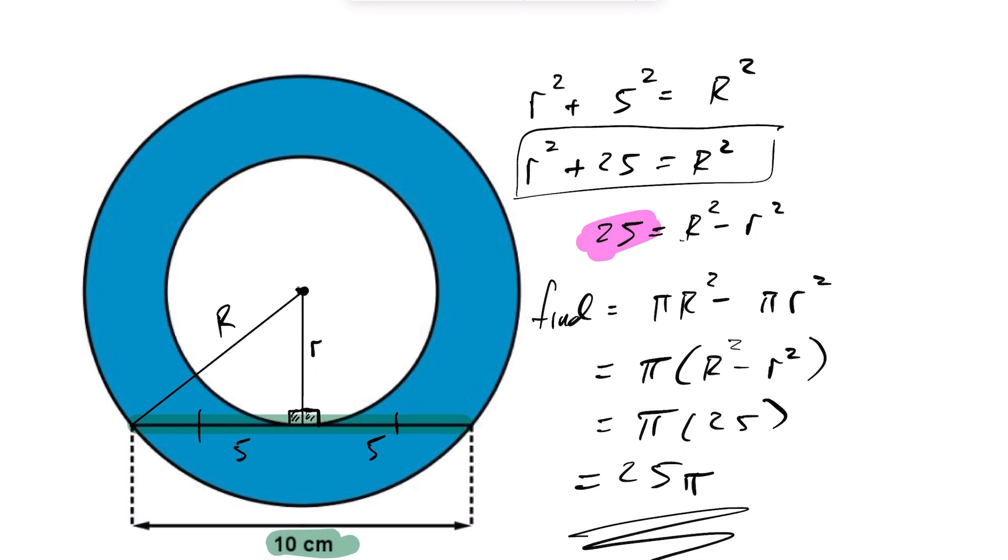So for this problem here, the area of the shaded region is 25 pi. Thank you.